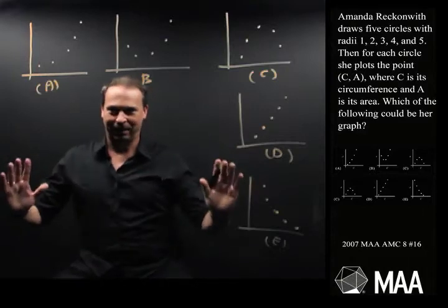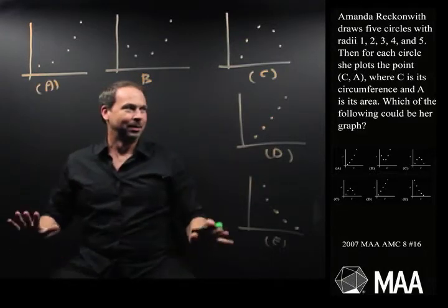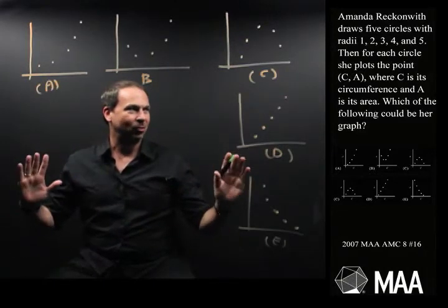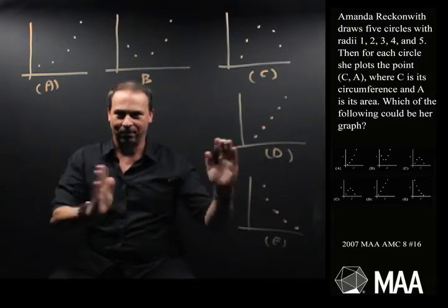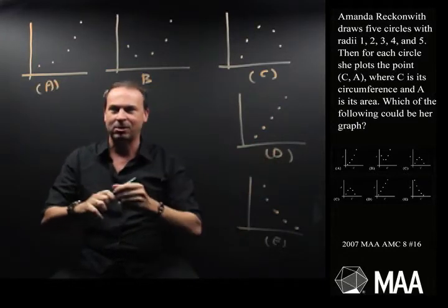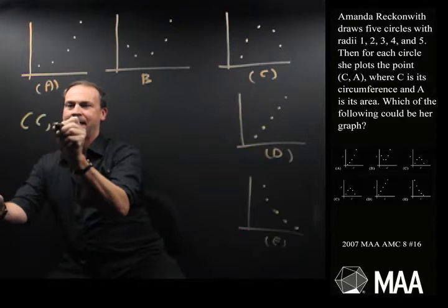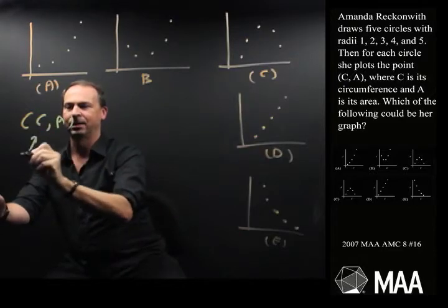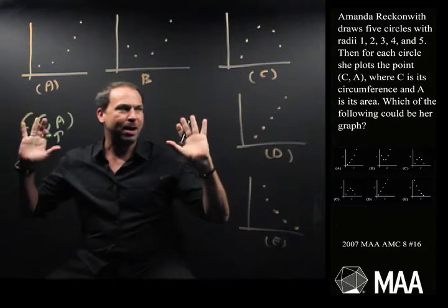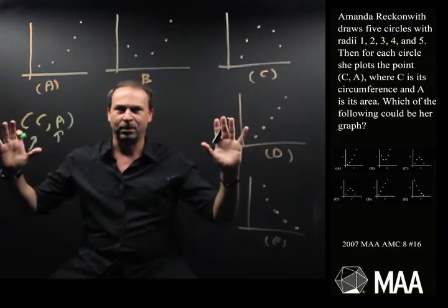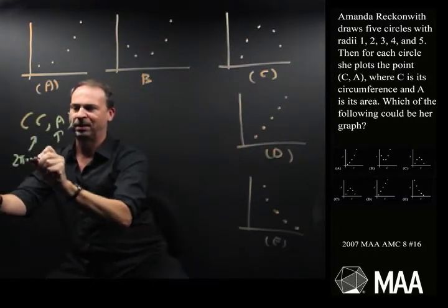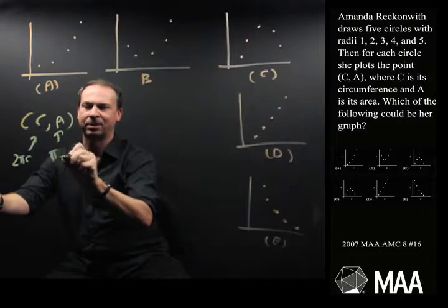All right, deep breath. This is a bit of a strange question. So Amanda draws five circles with radiuses 1, 2, 3, 4, and 5. And then she plots the point C, A. So C, A, where this is the circumference and that's the area. Now, of course, my brain goes right away to circumference is what? 2 pi r is the form of circumference of a circle and areas pi r squared.